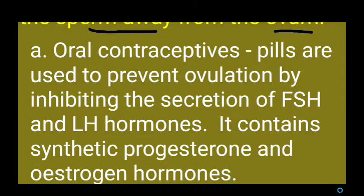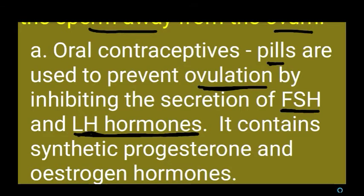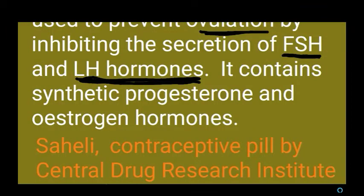One hormonal contraceptive method is using pills — oral contraceptive pills used to prevent ovulation. These pills work by inhibiting the secretion of FSH (follicle stimulating hormone) and LH (luteinizing hormone), the two hormones mainly needed for the formation of ova. The pills contain synthetic progesterone and estrogen; as blood contains more progesterone and estrogen, FSH and LH won't secrete, thus preventing ovulation.